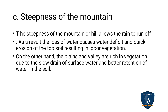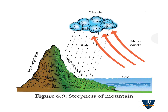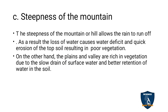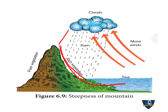The steepiness of a mountain or hill allows rain to run off to the sea. As a result, the loss of water causes a water deficit and quick erosion of topsoil, resulting in poor vegetation. Due to steepiness, water flows away and soil also erodes along with the water, so soil erosion takes place and vegetation is poor.